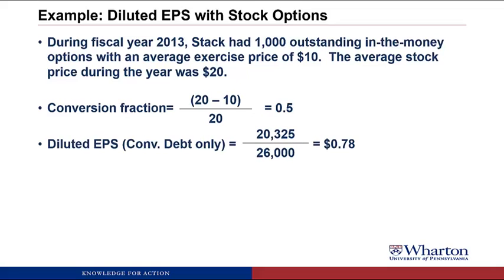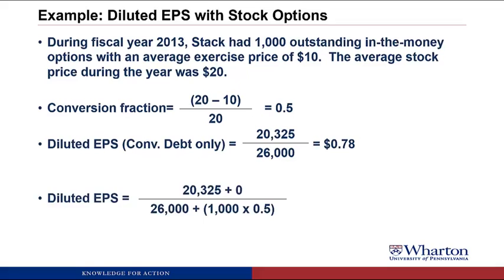Here's the diluted EPS calculation carried over from the convertible debt step, where we ended up with $0.78 per share. Now we add nothing to the numerator — whether stock options are exercised has no impact on the income statement. In the denominator, we add 1,000 options times the 0.5 conversion factor, which gives 500 additional shares. Dividing the numerator by the new denominator, we end up with a diluted EPS of $0.77 per share.